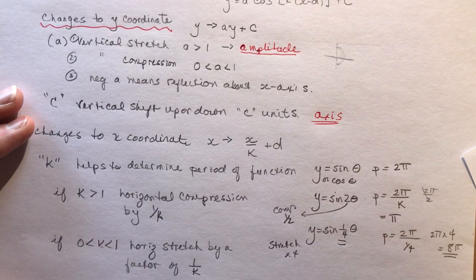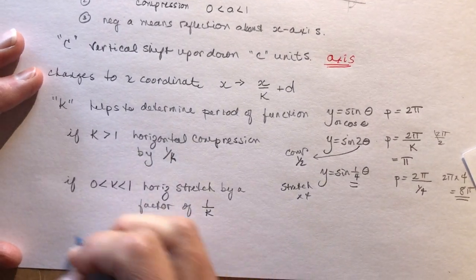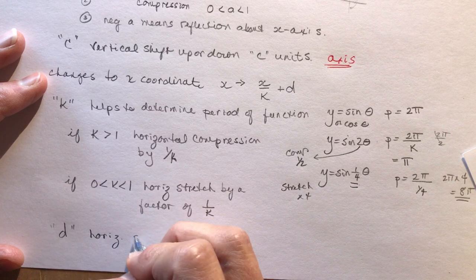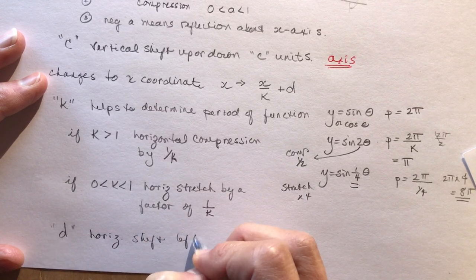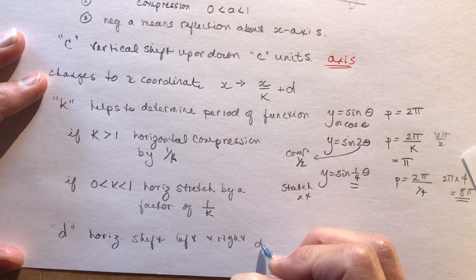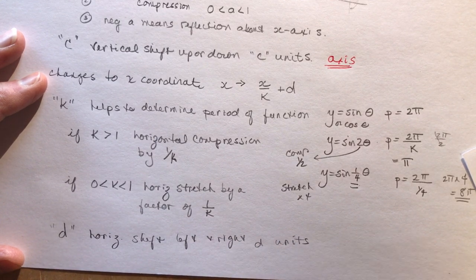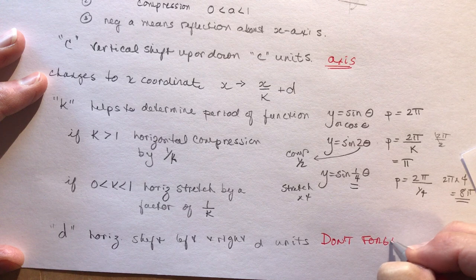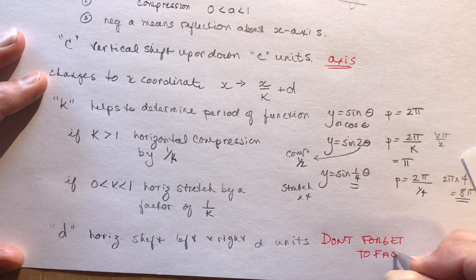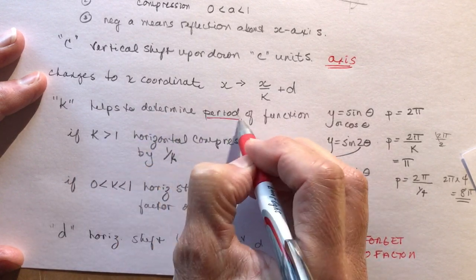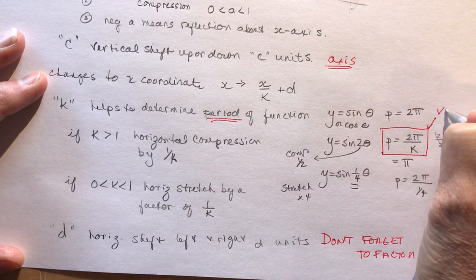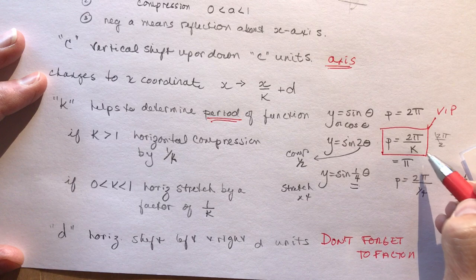The d value tells you the horizontal shift — left or right d units. And in red: don't forget to factor out k before reading d. The formula period = 2π/k is very important — VIP — and you're going to use it many times to find the period of the function.